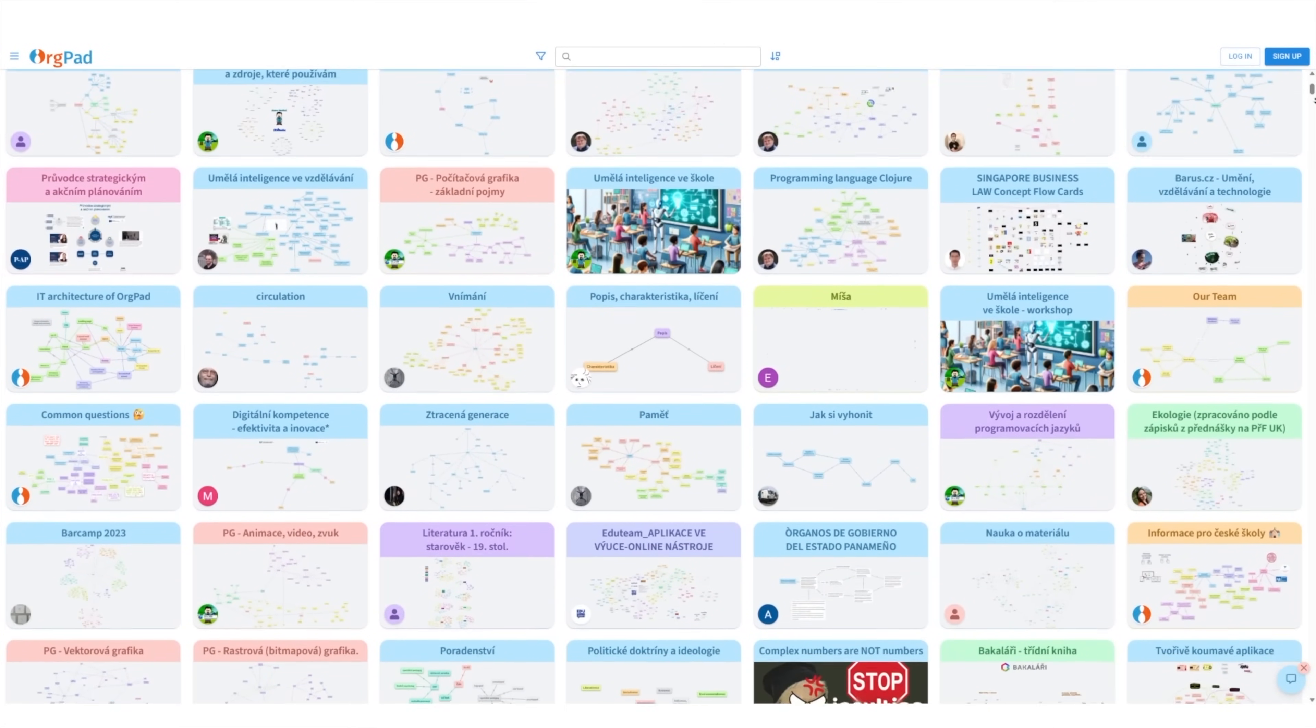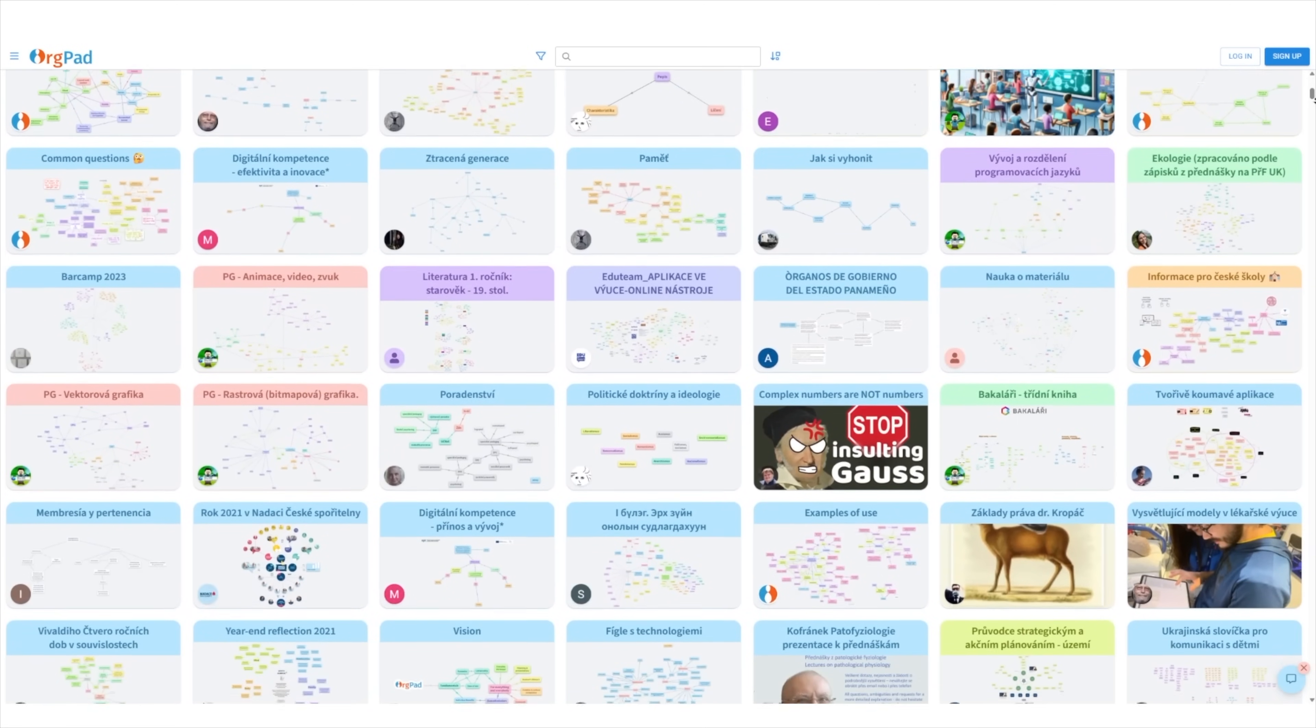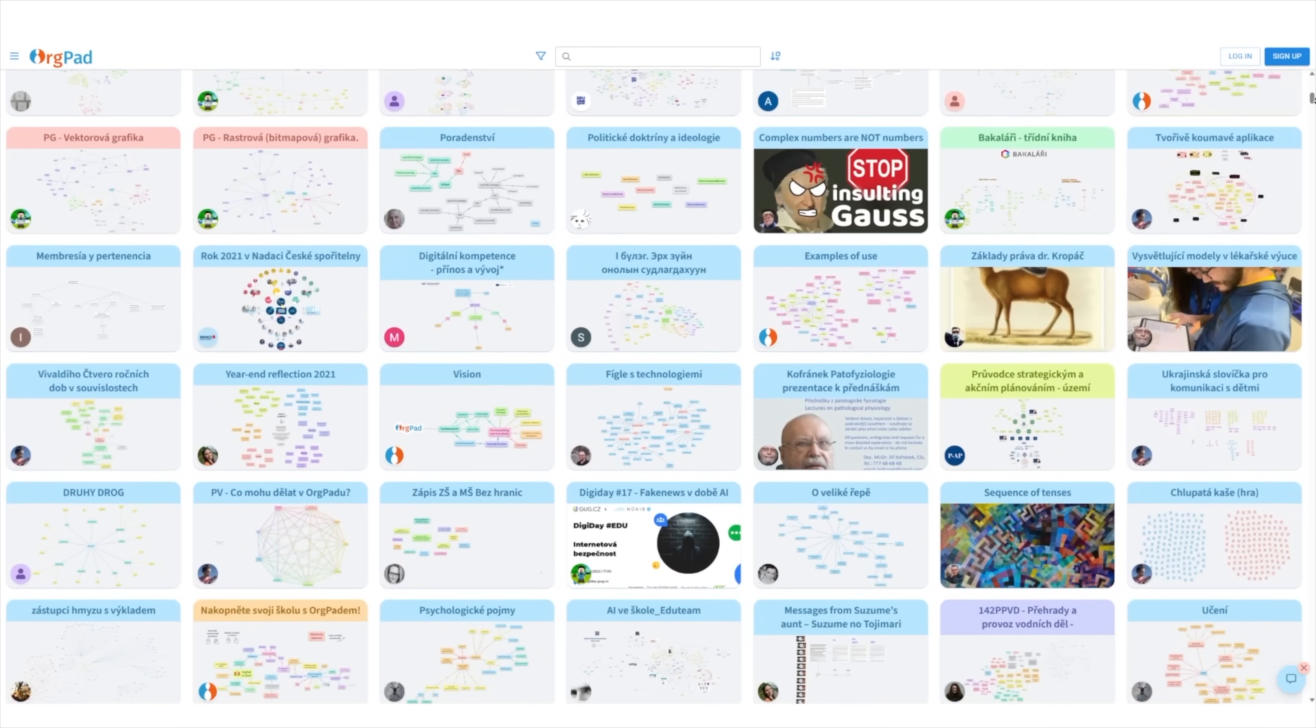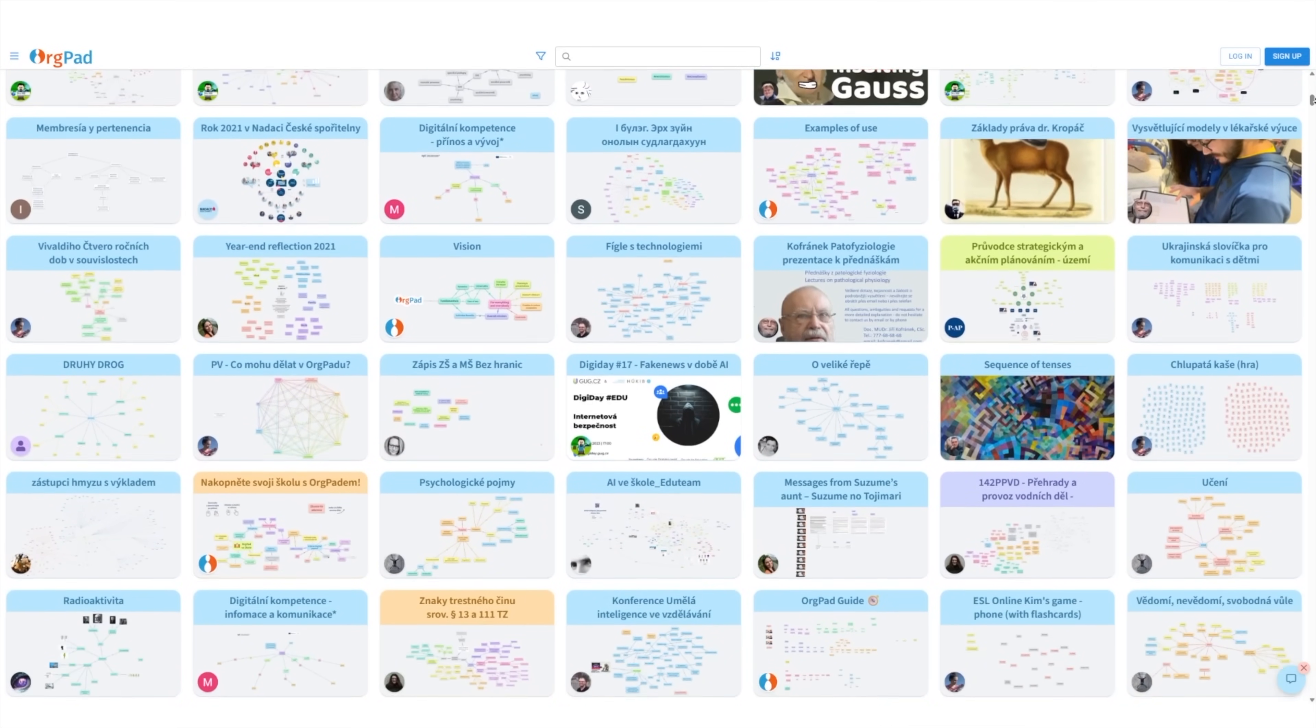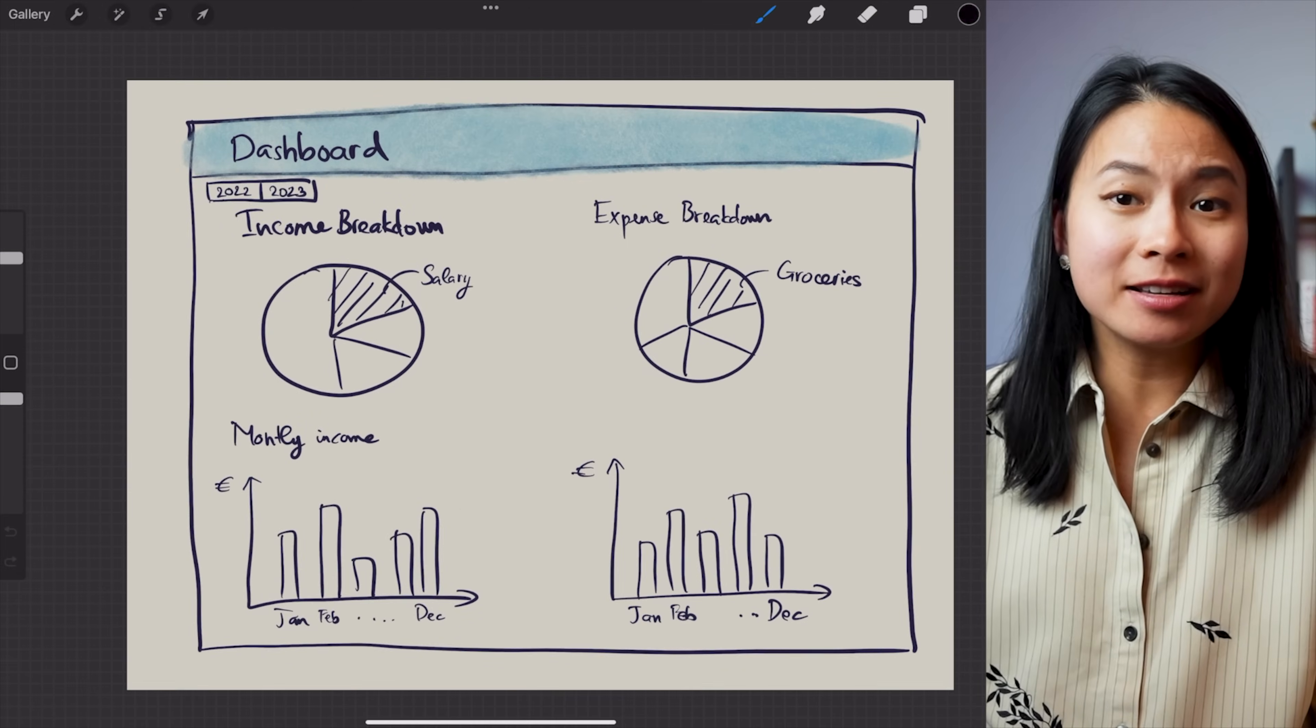For creating mind maps, I use Orgpad. It's hands down the best mind mapping tool I've ever come across. They didn't sponsor me to say great things about them, but I just generally love the tool, and I'd highly recommend it if you are looking for a web-based mind mapping tool. And if I have time and I'm in the mood to create something more unique like a visual note, I use Procreate app on my iPad. But honestly, you can use any other drawing software you have or just pen and paper.